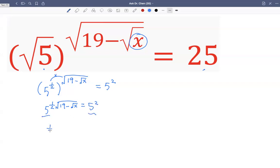So we get a half times square root of 19 minus square root of x equals to 2. Then we multiply by two on both sides to get rid of the half on the left hand side. So we get square root of 19 minus square root of x, that equals to 2 times 2 which is 4.